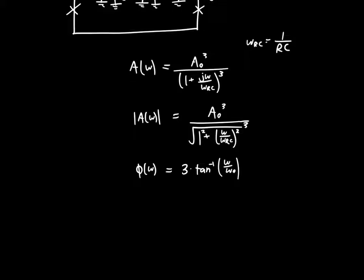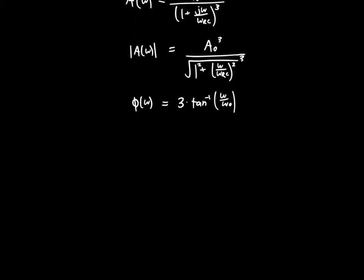So all that remains now is to calculate the derivative of each of these functions. So the derivative of the magnitude evaluated at omega naught with respect to omega is, and I calculated this using a calculator because I am not about to calculate it by hand, A0 cubed times omega times omega RC cubed divided by omega squared plus omega RC squared to the 5 halves.